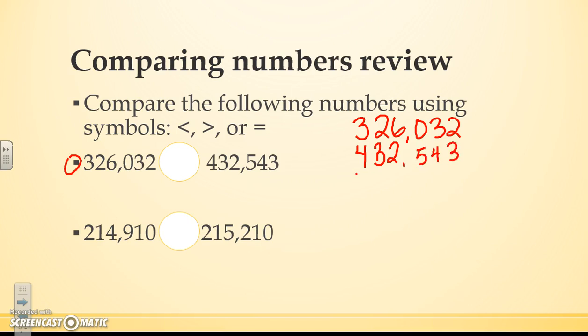Remember we start from the left and go right. I see that my numbers in the hundred thousands place are different. 4 is greater than 3, so this number is higher. So 326,032 is less than 432,543.